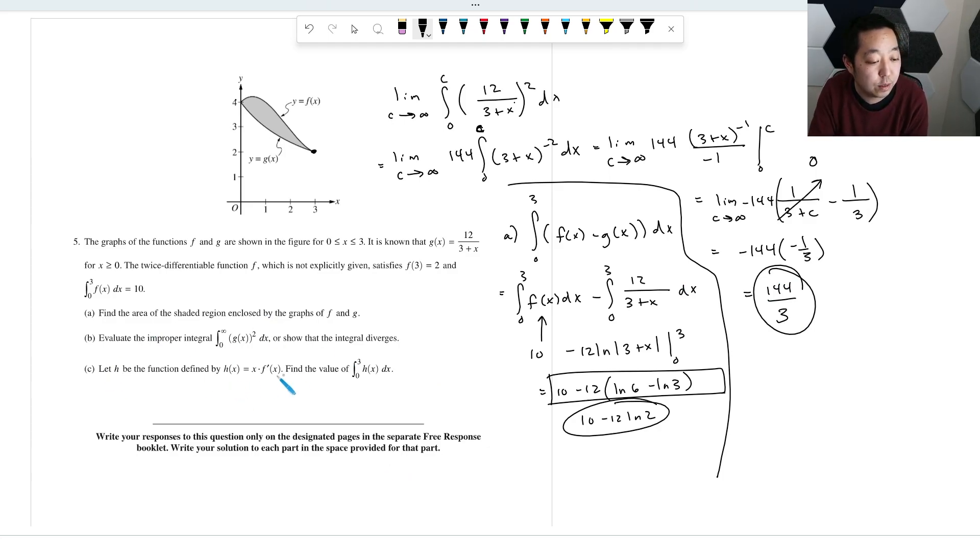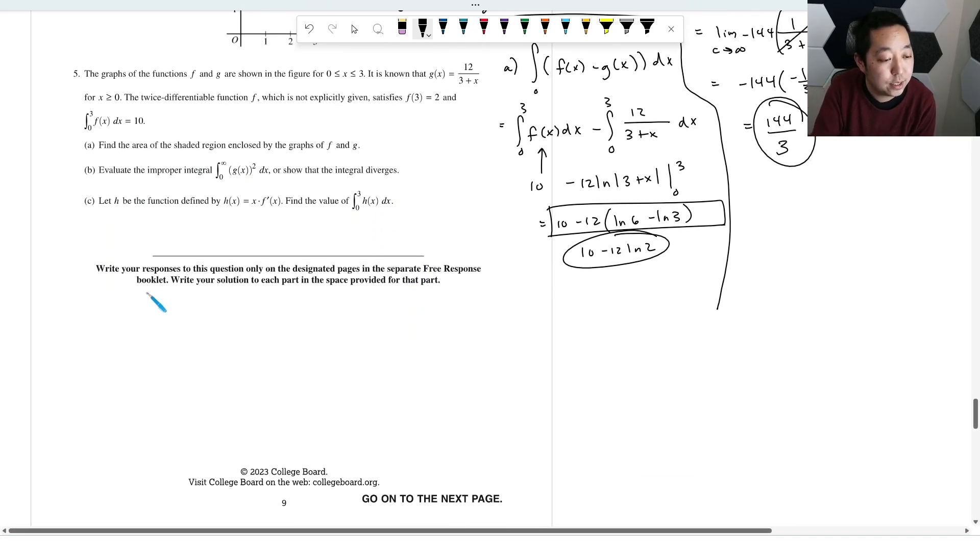Let H be the function defined by this. Find the value of the integral from here to here. So this one, why is this a BC question? Integral from zero to three of X times F prime of X DX. We got to do integration by parts because I don't know how to combine these. So we're going to do U is equal to X and our DV is going to be F prime of X DX.